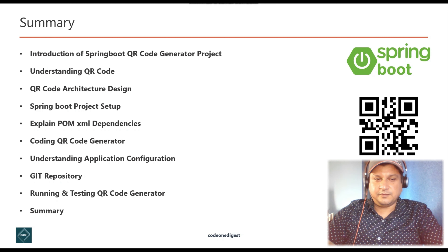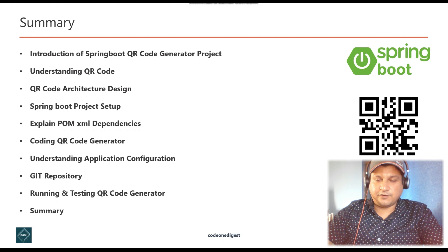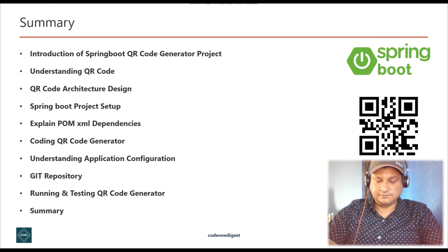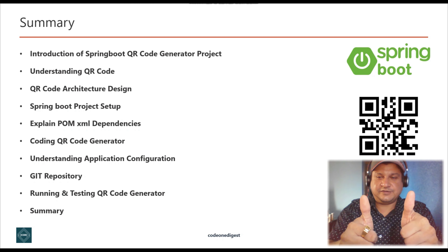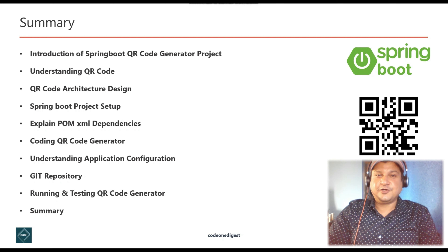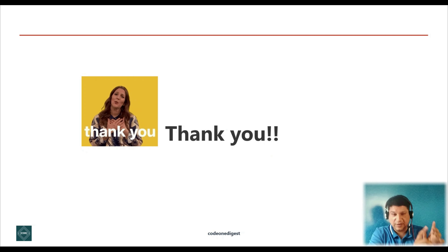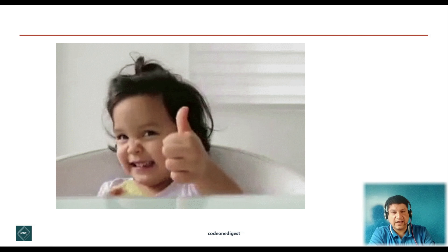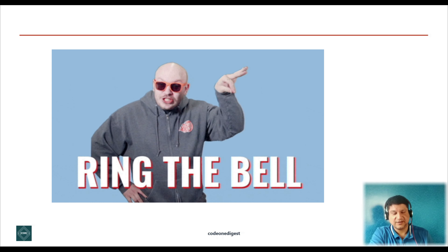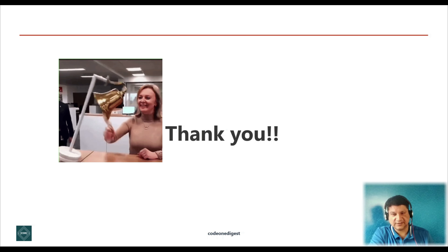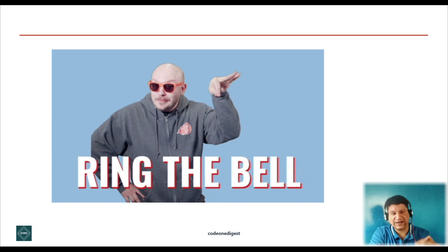We generated three QR codes — one from console and two via the API channel, including one for a URL which we successfully browsed in a browser. If you like this video, give it a thumbs up. If you are new to the channel, subscribe to grow the Code One Digest family. Click the bell icon for latest video notifications and share this video with your friends and colleagues.